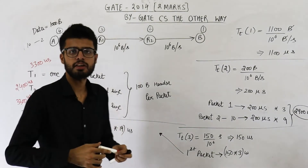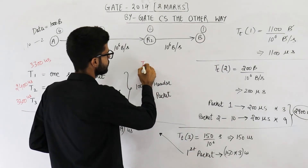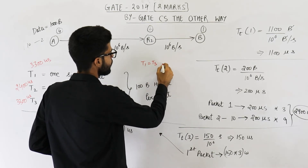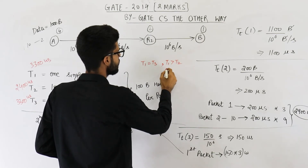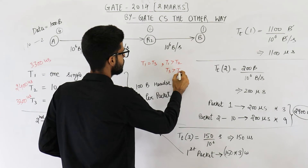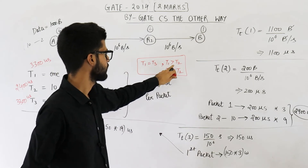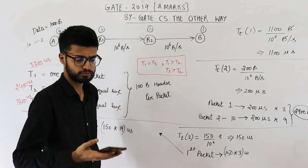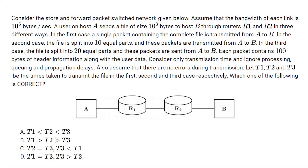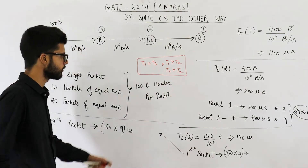Now let us find the relation between T1, T2, and T3. T1 is equal to T3, both being 3300 microseconds, and T3 is greater than T2. The answer is option D, which states T1 equals T3 and T3 is greater than T2.